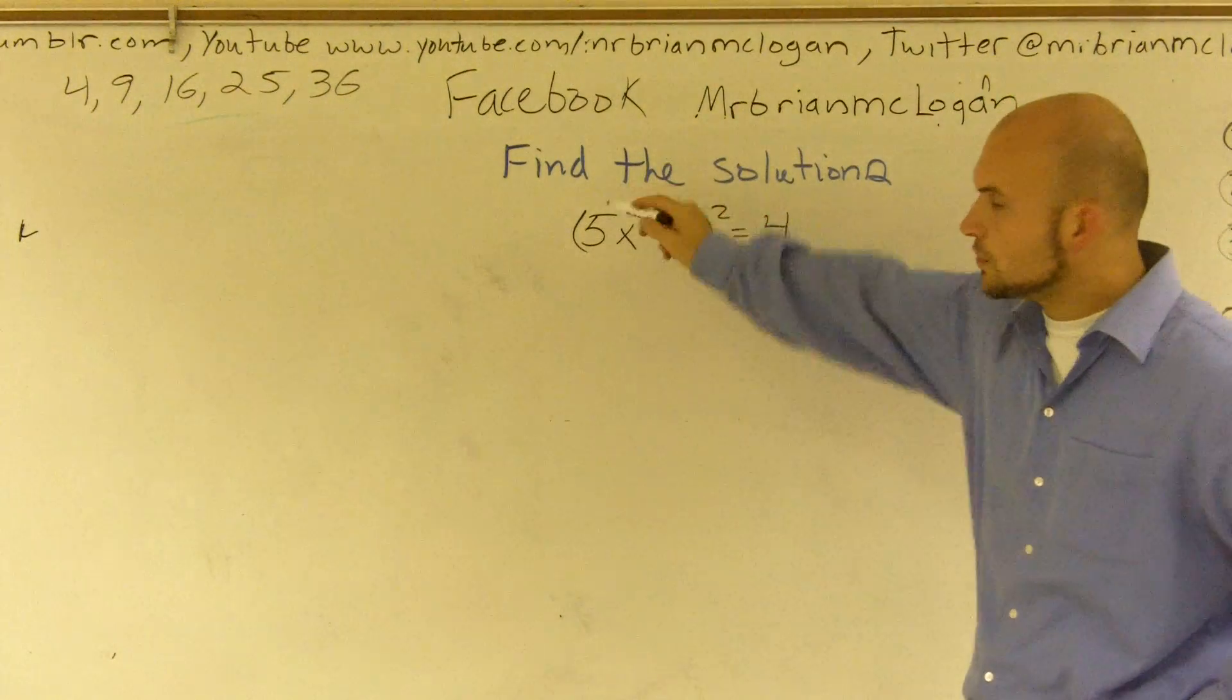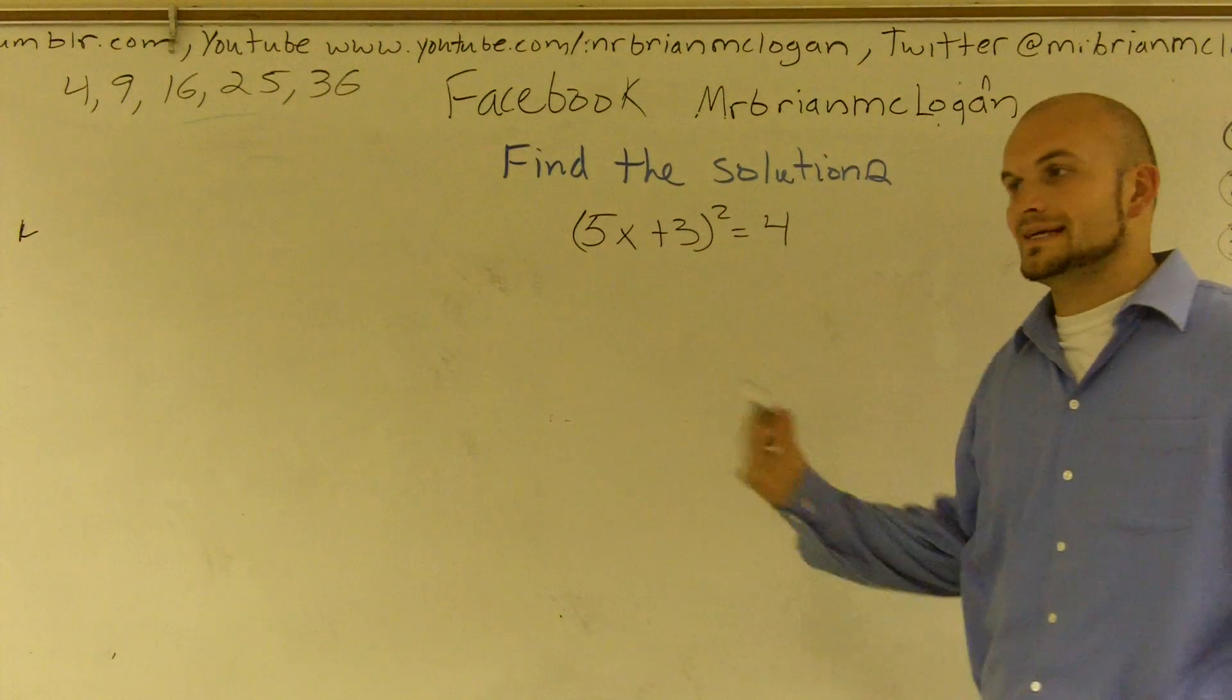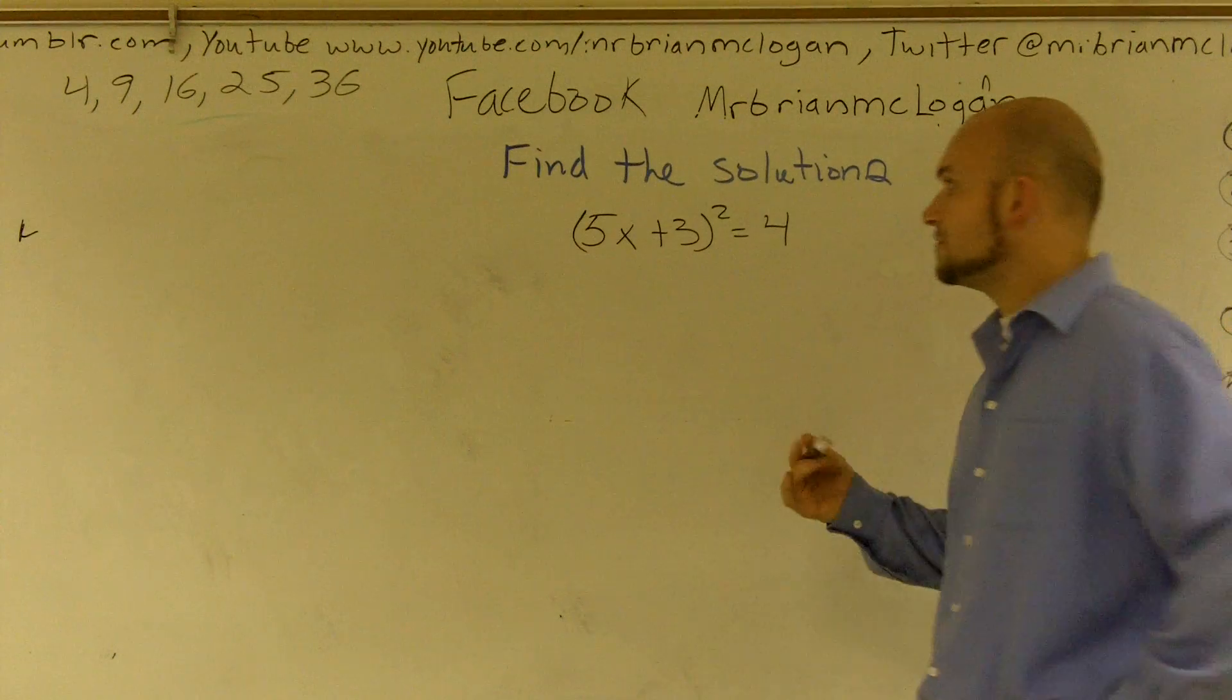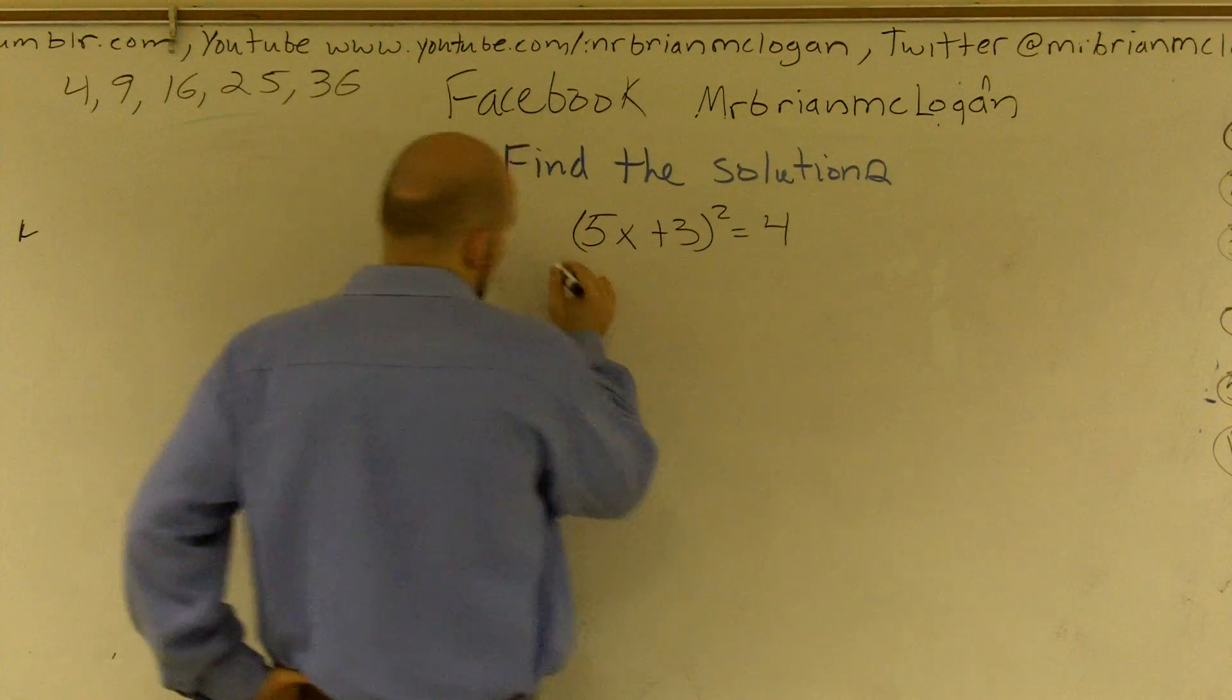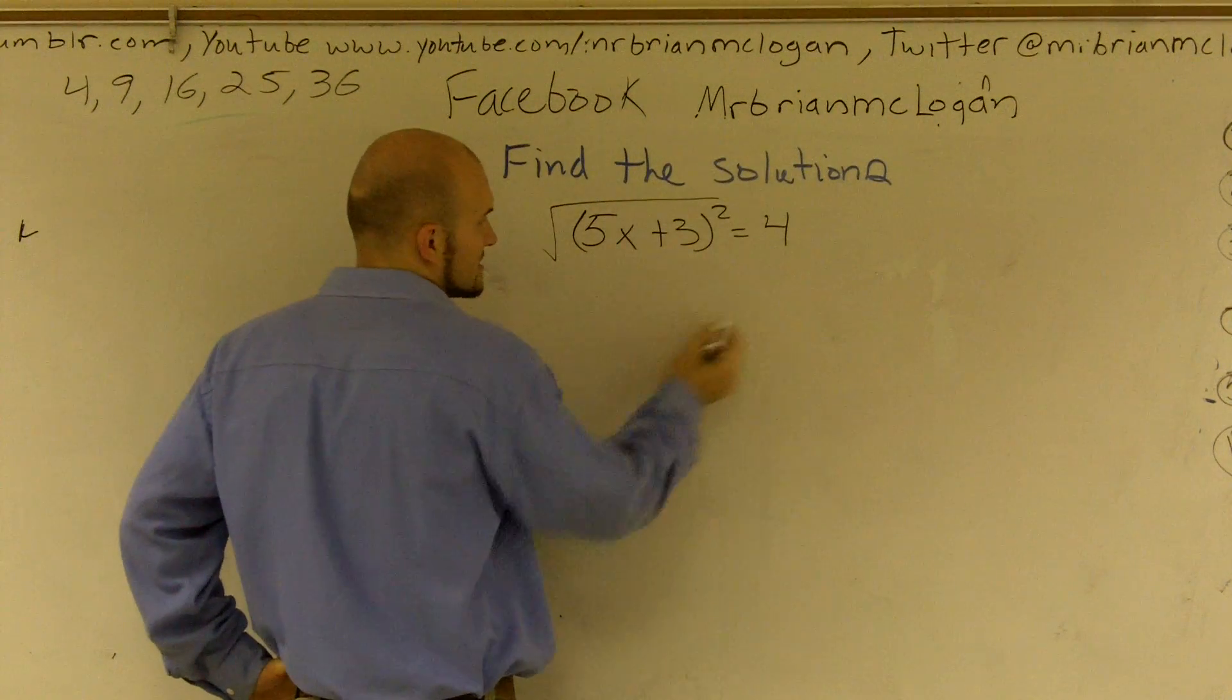But before I can do that, I have this whole thing squared. So I need to get rid of that squared. And the inverse of squaring or the opposite operation of squaring is to take the square root.